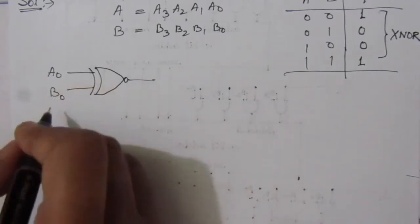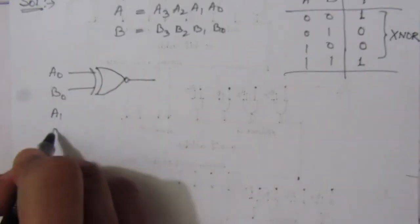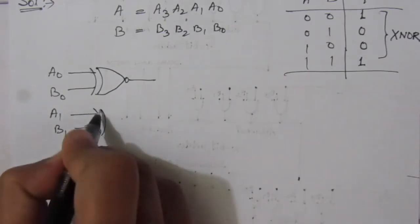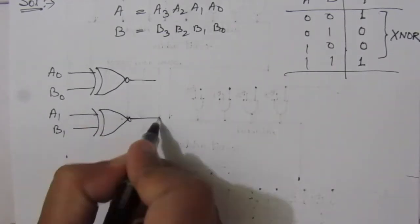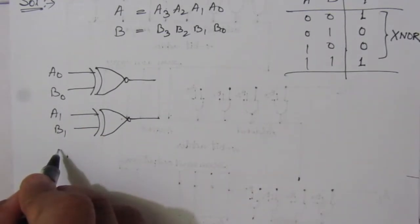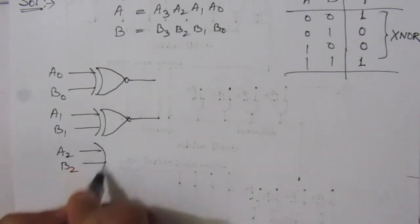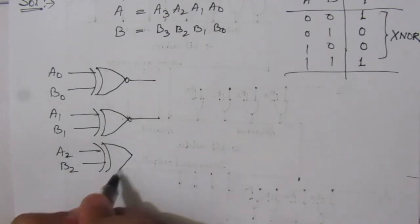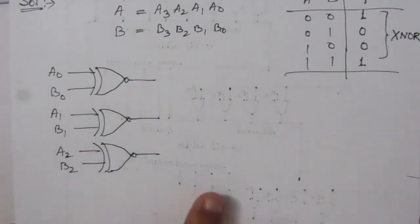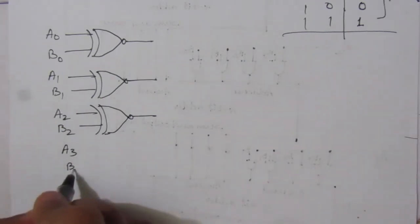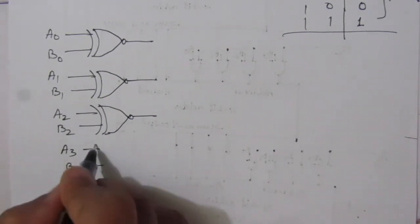Similarly, we have to compare all the bits. A1, B1, here also we will use XNOR gate. Similarly for A2, B2. And A3, B3. These are the 4 bit comparisons, that is bitwise comparison.